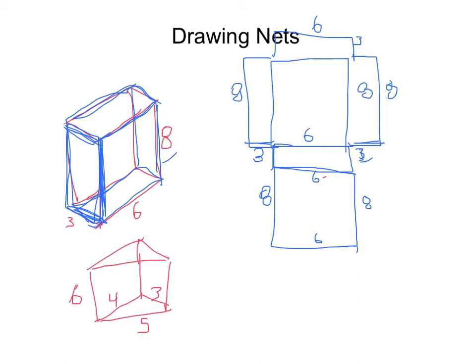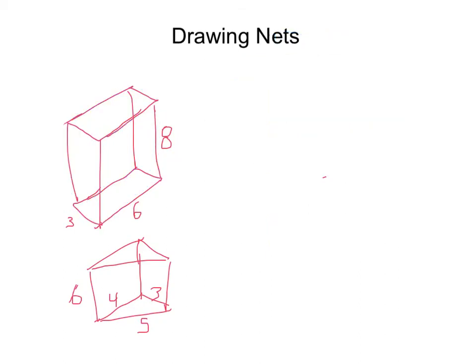That would be what this rectangular prism would look like unfolded, and that is the net of that solid. Let's try this triangle here.